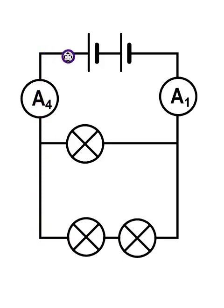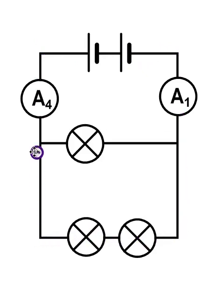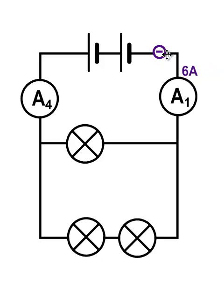Whichever branch the electron goes through, you'll notice it always passes through the first ammeter and always passes through the last ammeter. So no matter which branch — middle or lower — the electron goes through, it always has to pass through these two ammeters. That means the current through these two ammeters will be the same. So if the current through this ammeter is six amps, the current through the other ammeter must also be six amps, because all electrons pass through both.